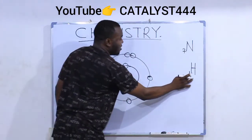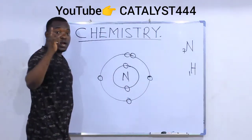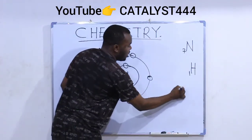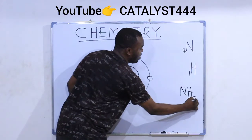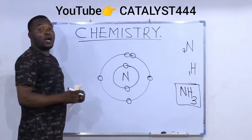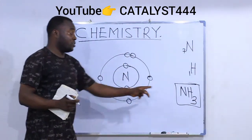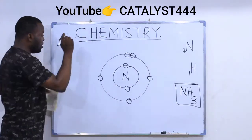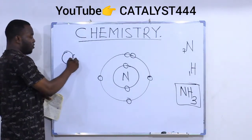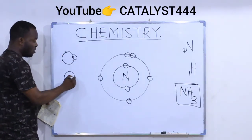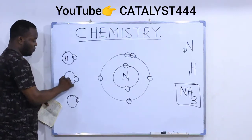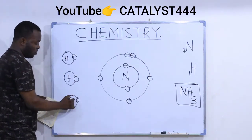Hydrogen has an atomic number of one, and there are three atoms of hydrogen present in the ammonia molecule. So we are going to have hydrogen in three places — each hydrogen has one electron, and we have three of them: H, H, H.